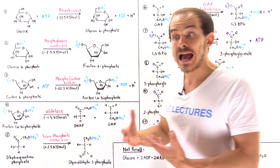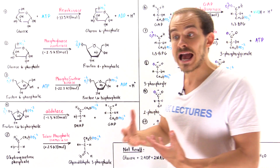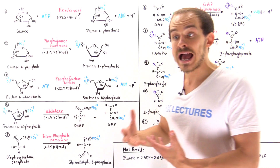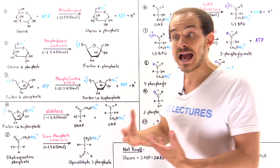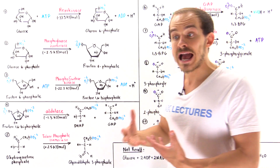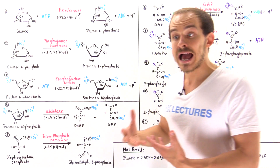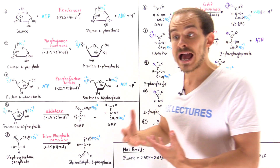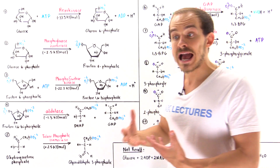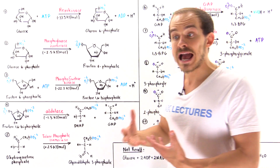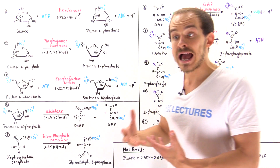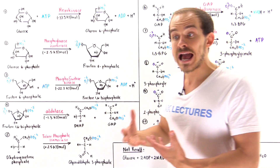In step nine, enolase transforms 2-phosphoglycerate into phosphoenolpyruvate (PEP) via a dehydration reaction—a double bond is formed and water is eliminated. PEP is a very unstable molecule with very high phosphoryl transfer potential.